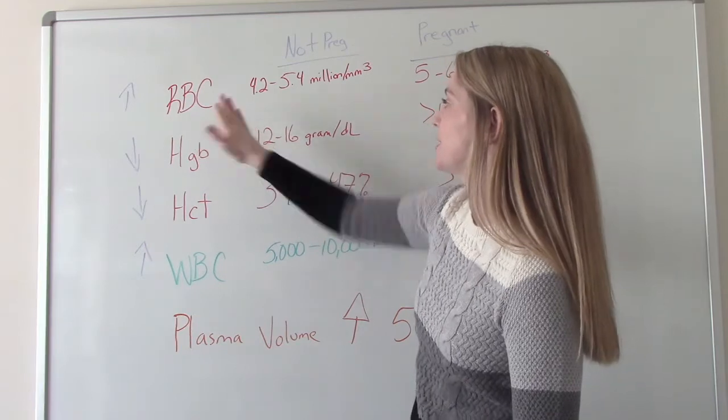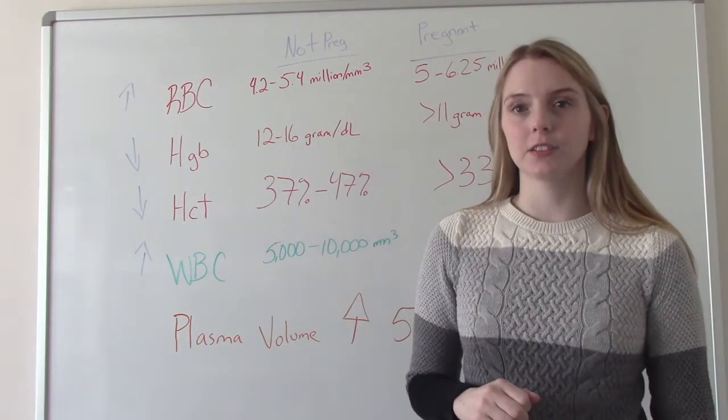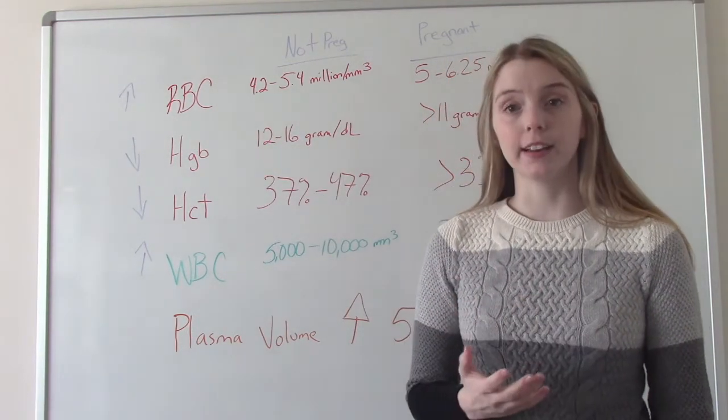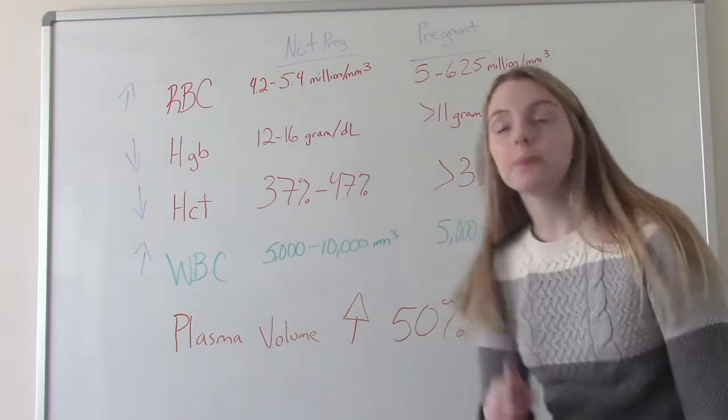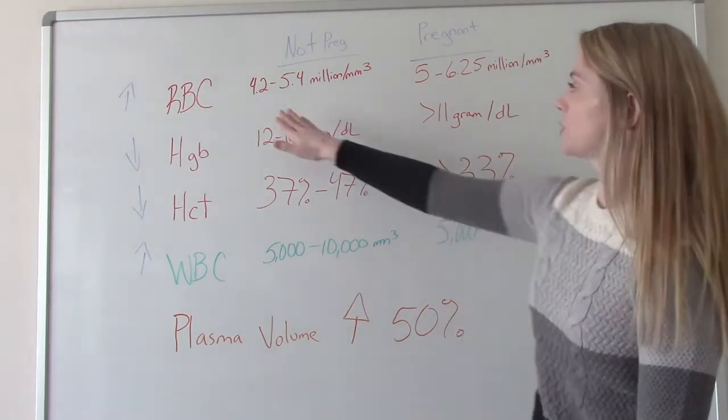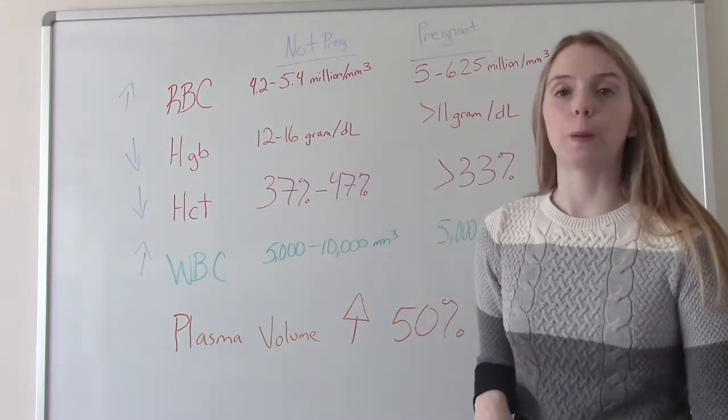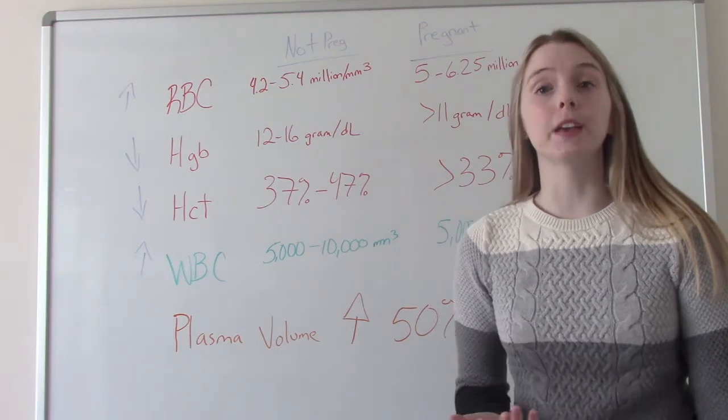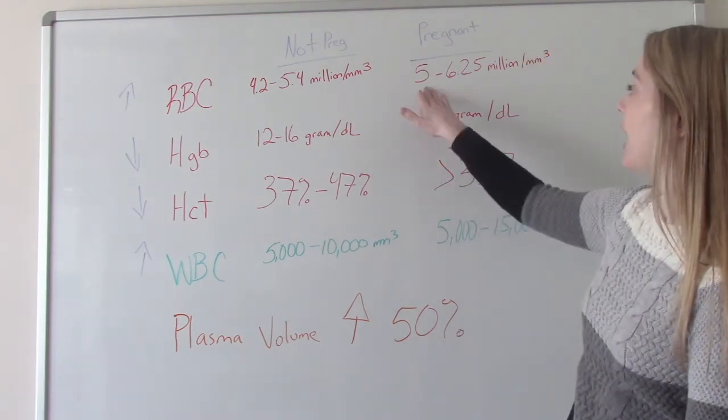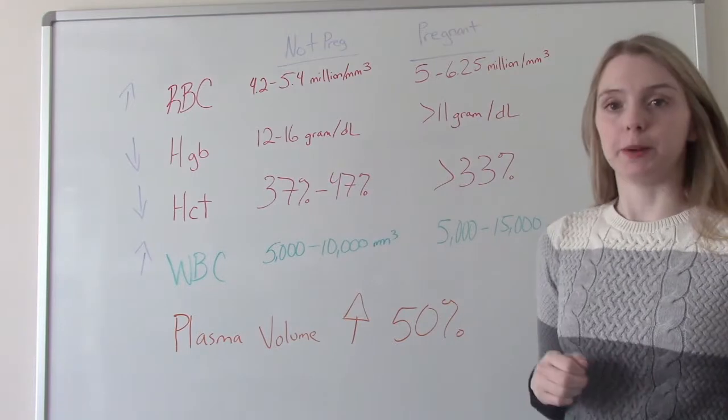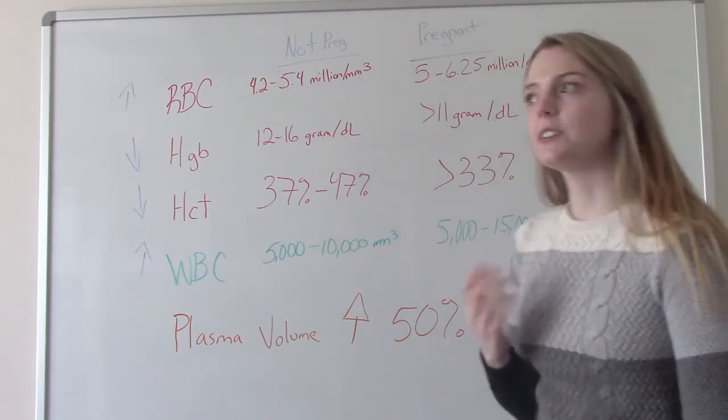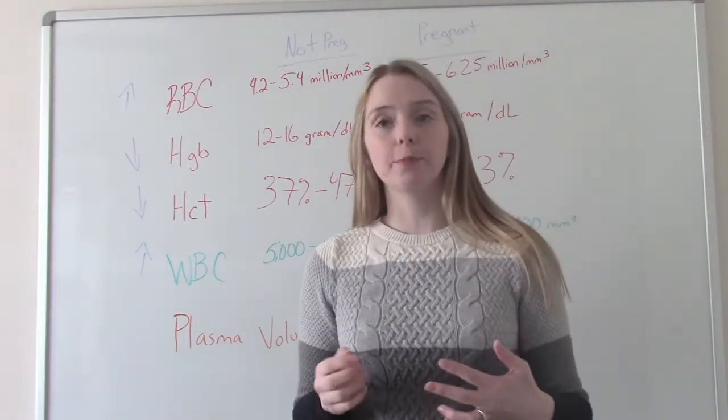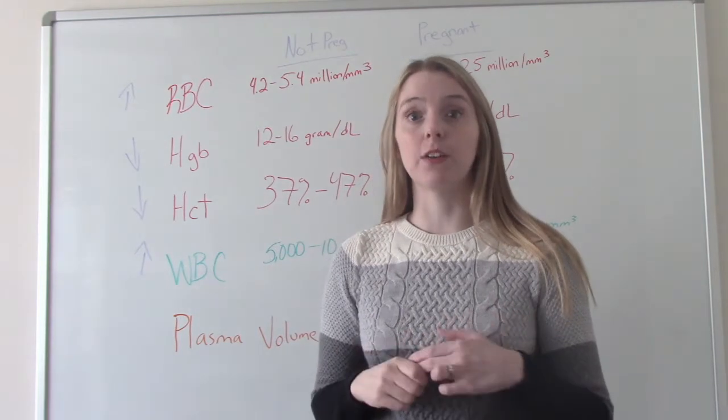The first change is going to be seen in our red blood cells. So when you are not pregnant, normally for a woman, your red blood cell count is 4.2 to 5.4 million. And then when you become pregnant, it's 5 to 6.25 million. That is about a 40 to 45% increase in red blood cell volume.